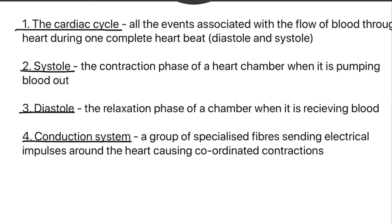Let's look at a few key definitions we need to know before moving forward. Firstly, the cardiac cycle — this is all the events associated with the flow of blood through the heart during one complete heartbeat, so both diastole and systole. This includes atrial diastole, atrial systole, ventricular diastole, and ventricular systole.